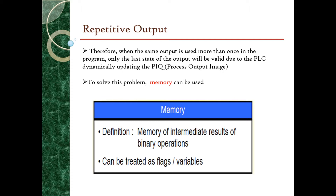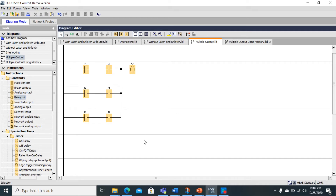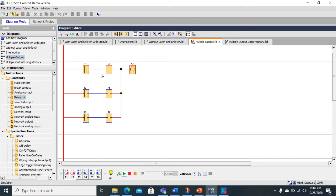If you are using the same output more than once in the program, you can solve it by using a memory. By definition, memory is an intermediate result of binary operations and is normally stated as a flag or variable in the PLC ladder logic diagram. You can use a memory to solve the repetitive output problem. Through the ladder logic diagram you can turn on M1, M2, or M3 based on your logic combinations, and then Q1 will respond to the state of each memory.